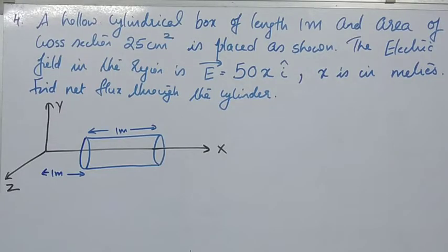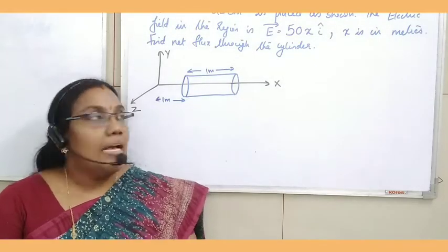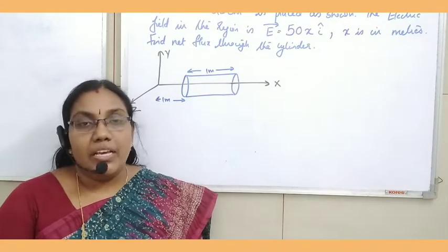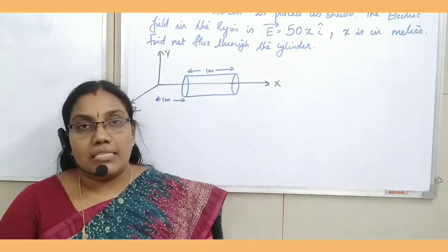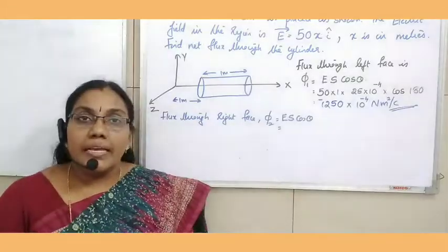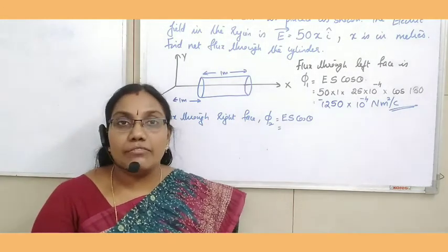Fourth question: a hollow cylindrical box of length 1 meter and cross-section area 25 cm² is placed as shown. The electric field in the region is E⃗ = 50x î, where x is in meters. Find the net electric flux through the cylinder. We need to find flux through the left face, right face, and curved face.